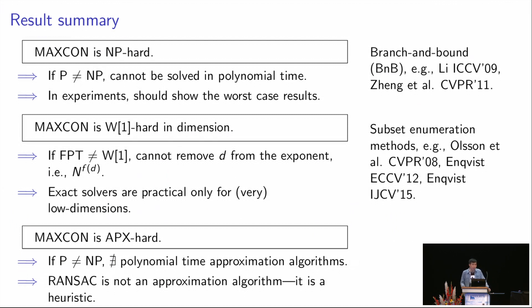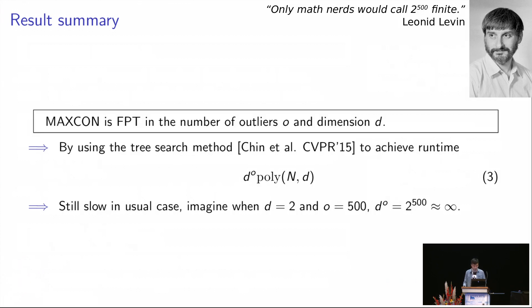So we prove that MAXCON is NP-hard, which tells us that we don't want to hope to solve it in polynomial time in general. And we also prove that it's W1-hard in dimension D, so that we don't hope to solve it only in the runtime that is exponential only in the dimension D. And we also show that MAXCON is APX-hard, which tells us that we don't hope to come up with a very accurate algorithm that is polynomial time. Furthermore, we have this result which I haven't mentioned just now, which is MAXCON is FPT in the number of outliers and the dimension D.